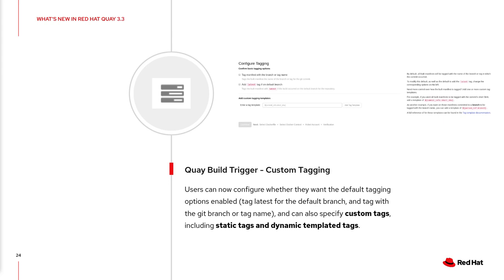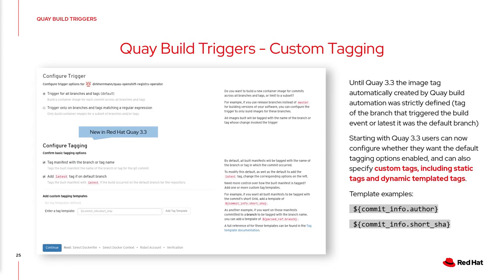Another powerful feature is custom tagging for builders. In the past we were very opinionated about how image tags were defined for builds triggered via Quay build automation — it was either the branch name or 'latest' for the default branch. Now you can specify custom tags: you can deselect the default rules and specify static or dynamically templated tags. You can combine multiple tags and use them side by side.